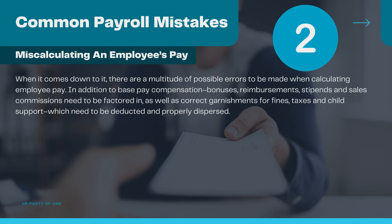When it comes down to it, there are a multitude of possible errors to be made when calculating employee pay. In addition to base pay compensation, bonuses, reimbursements, stipends, and sales commissions need to be factored in, as well as correct garnishments for fines, taxes, and child support, which need to be deducted and properly dispersed.